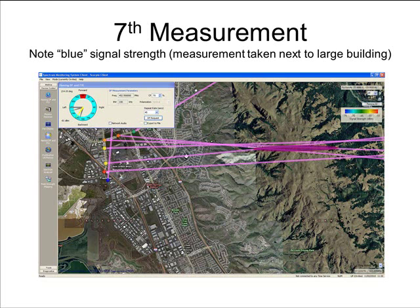There are a couple of important points to note here. First, the signal strength indication is blue, around minus 75 dBm, which is significantly lower than previous measurements. Second, the fixed point and the error ellipse have not changed at all compared to the previous screen. This shows that the system has automatically calculated that the bearing taken in this measurement does not correlate with the previous bearing measurements, and has therefore automatically discarded this measurement from calculating the fixed point.